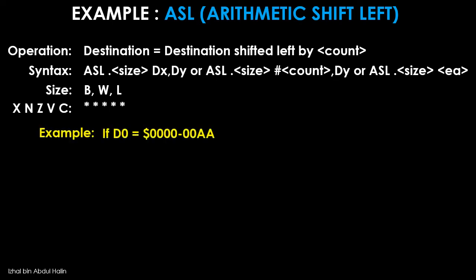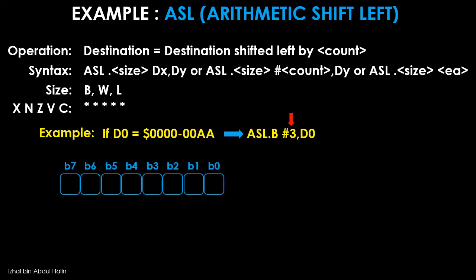In this example, register D0 initially contains AA. ASL.B 3, D0 is to be executed. Note that immediate data 3 specified in the instruction will shift the operand 3 bits to the left. During execution, register D0 is initially reconfigured as shown. The C and X flags are connected to the MSB of register D0, and the LSB receives a new 0 every time a shift operation is executed. Now let's begin with the shift left operation — data AA is loaded into register D0.